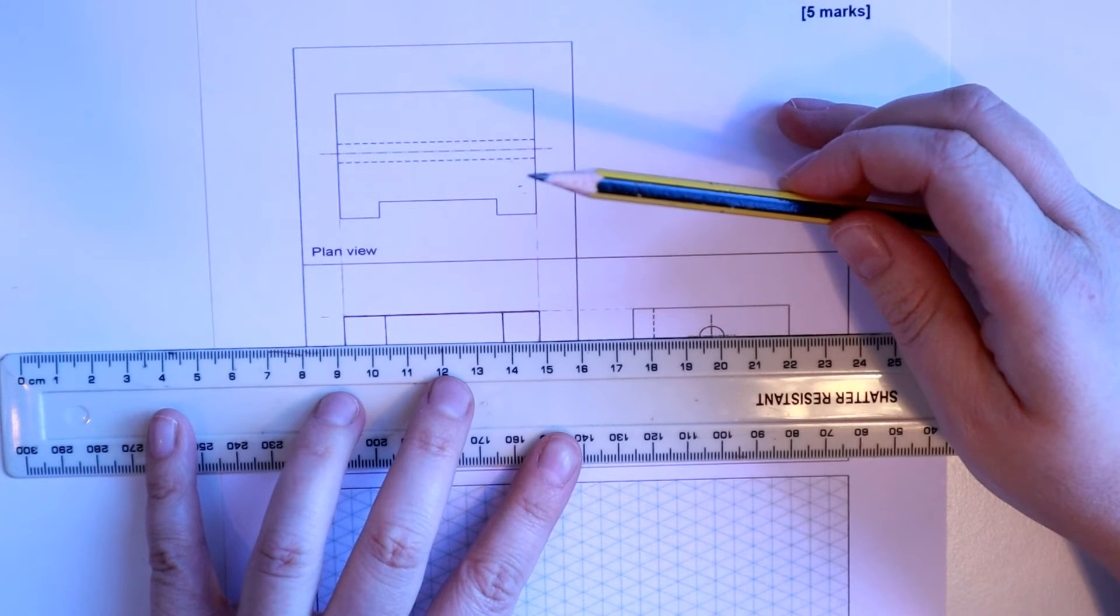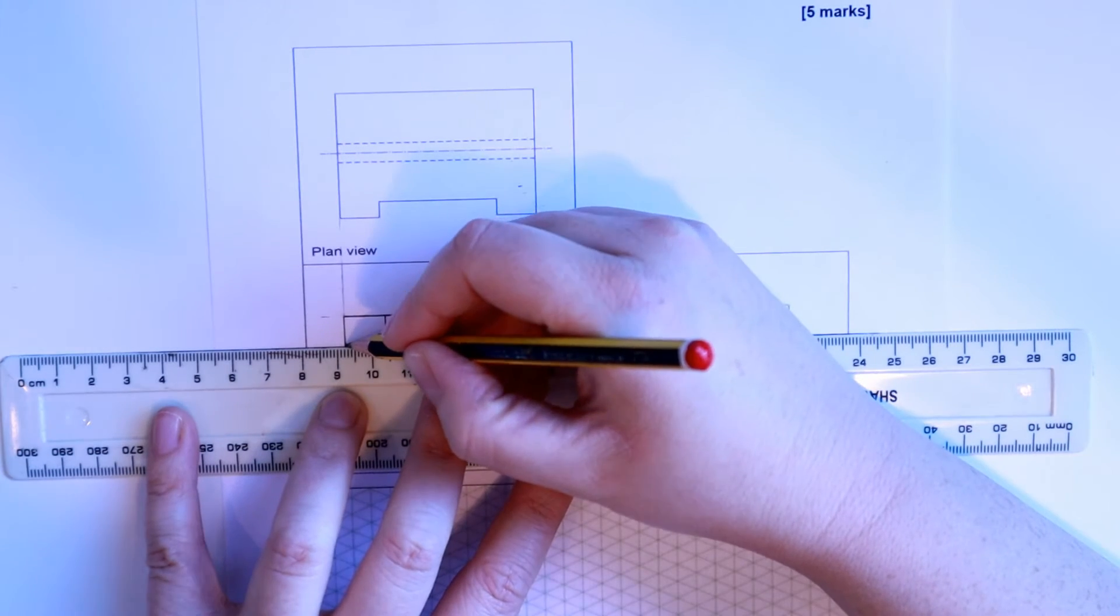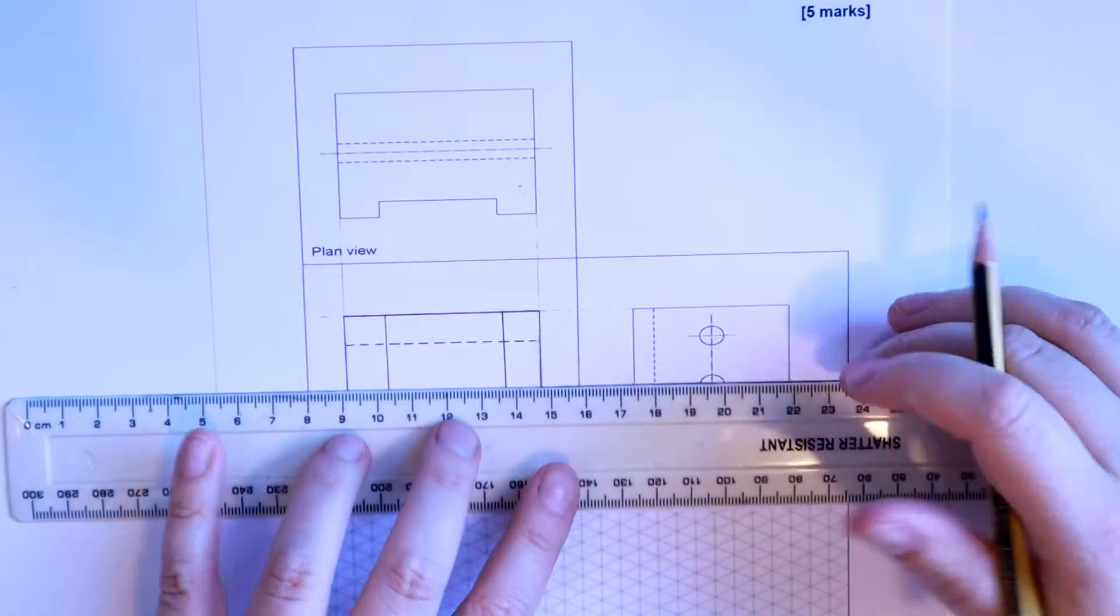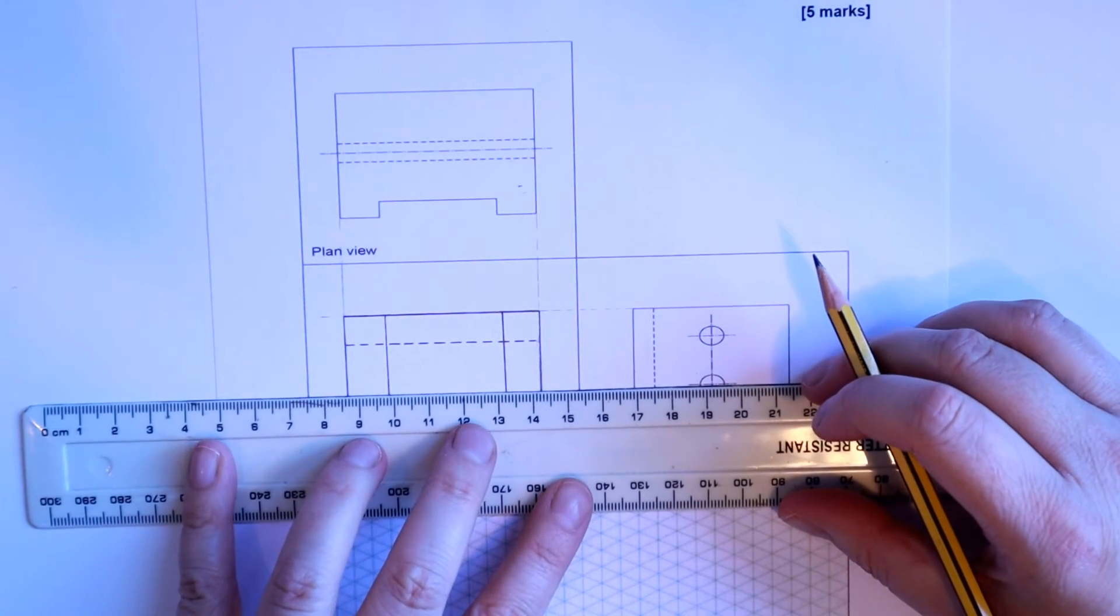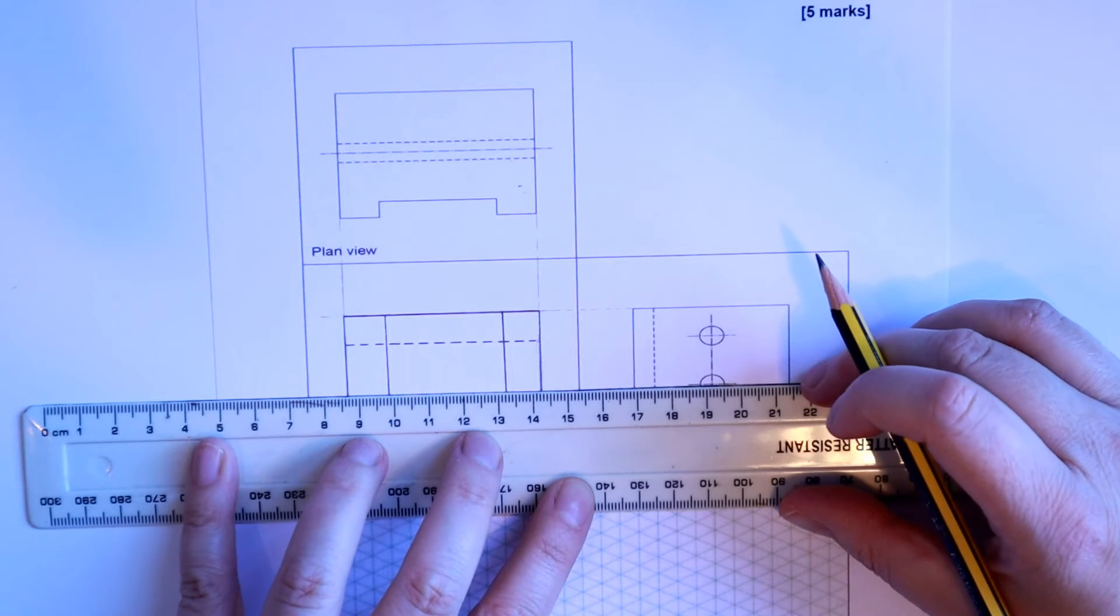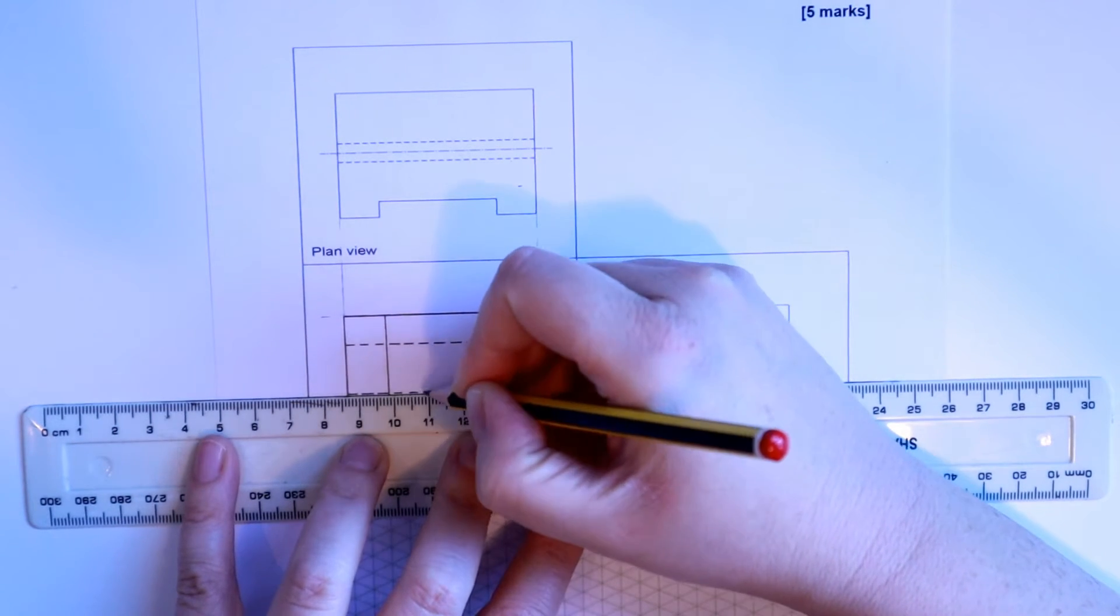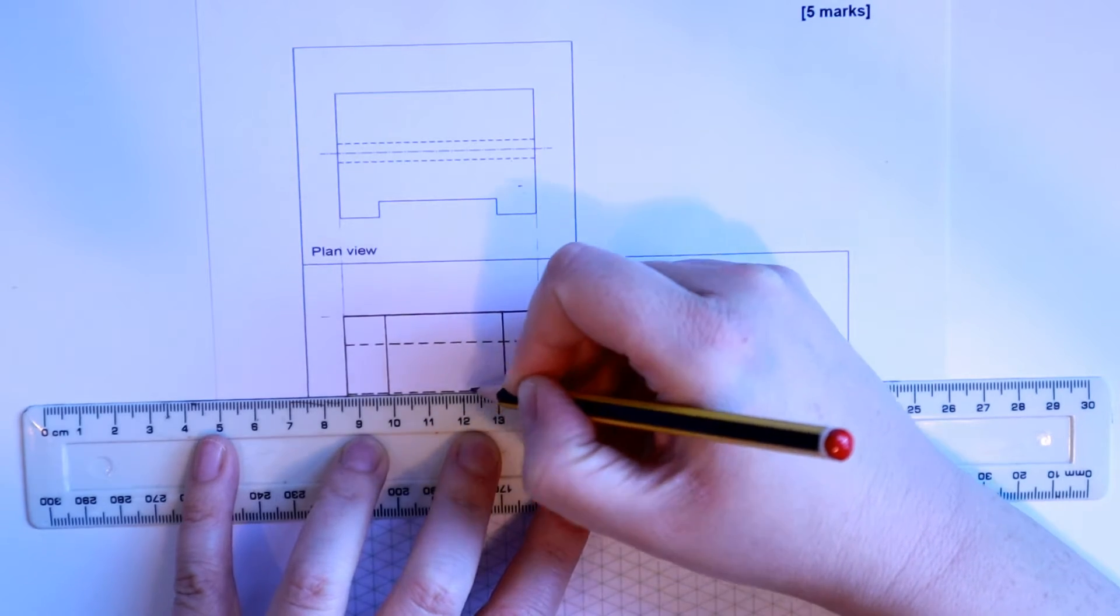So the way this will show is with dotted lines. These are long dash lines to represent where the drill goes through. And that would be for the bottom one as well because there's two drill holes. So I'll just draw that one in as well. So nice, neat, long dash lines.